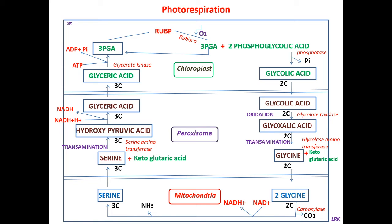Glyceric acid enters back into the chloroplast, where it undergoes phosphorylation using one ATP, resulting in the formation of phosphoglyceric acid — that is two molecules of PGA. So the two phosphoglycolic acid molecules undergo all these reactions and ultimately form PGA only.